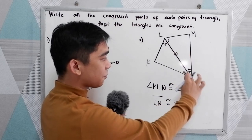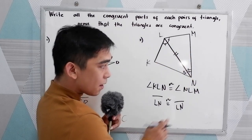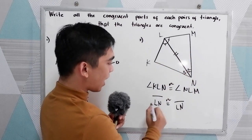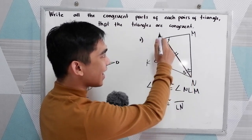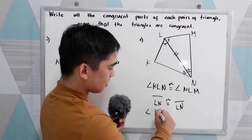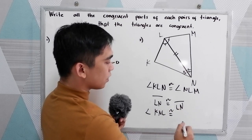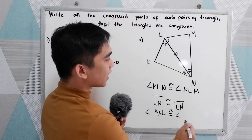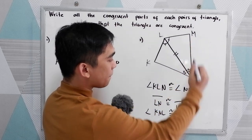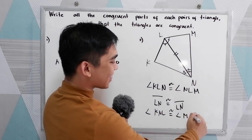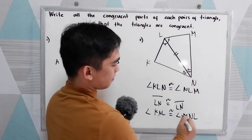And from our given, angle KNL is congruent to angle MNL. So we now have our angle, side, and angle components established.